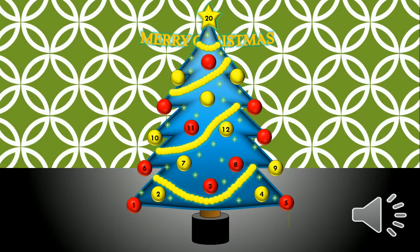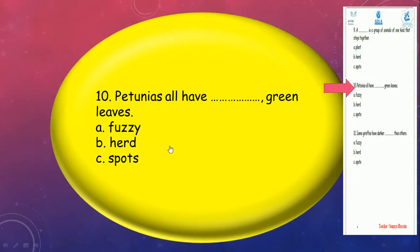Super, number two. Petunias or all have what? Green leaves? Do you remember? Fuzzy, herd, or spots? Fuzzy, excellent. It means it has small soft hairs.